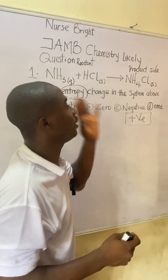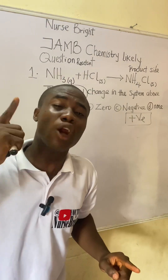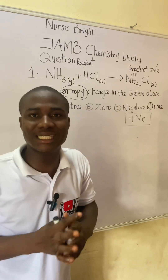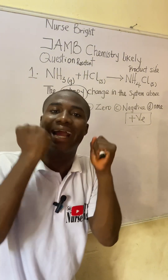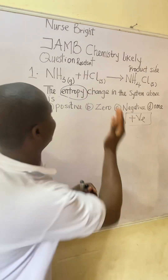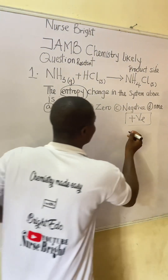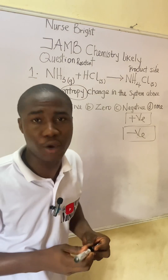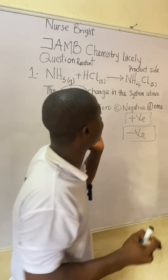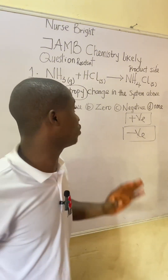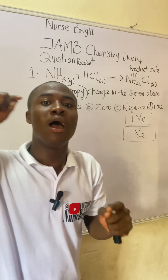If the reactant side of a reaction has more gas species than the product side, we simply say the entropy change for that reaction is negative. Please note this — it is very important and will help you solve this question.